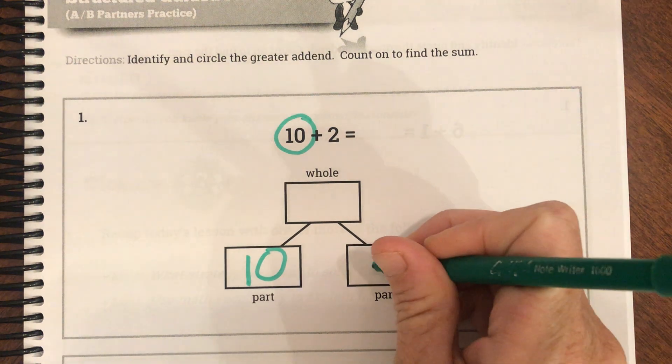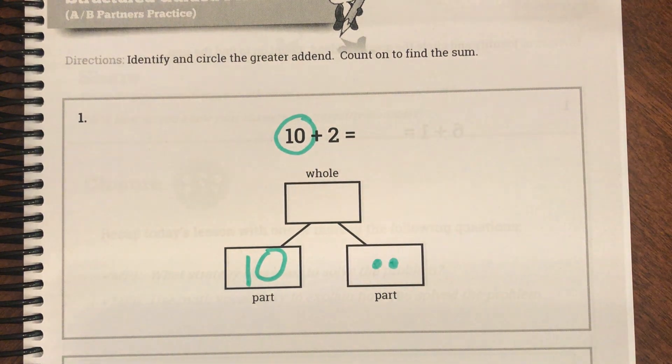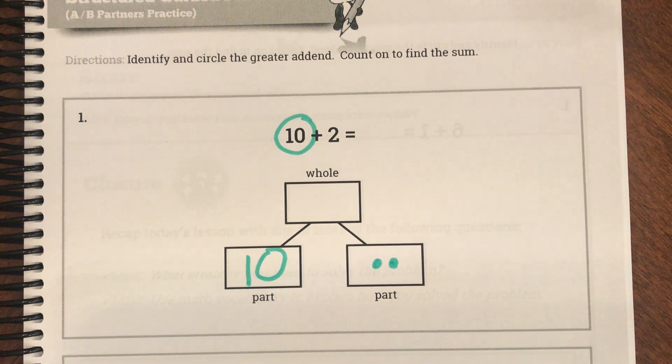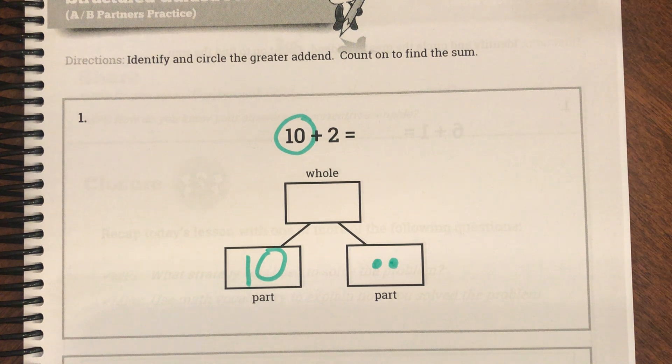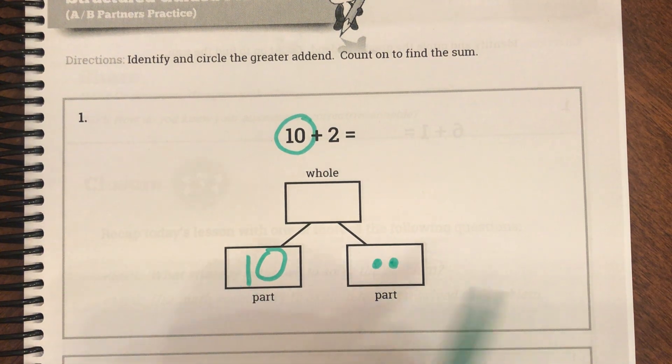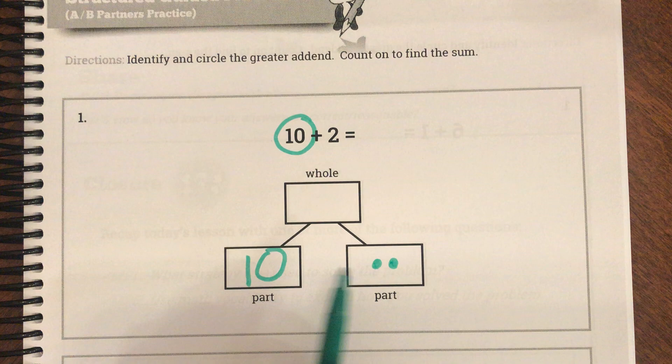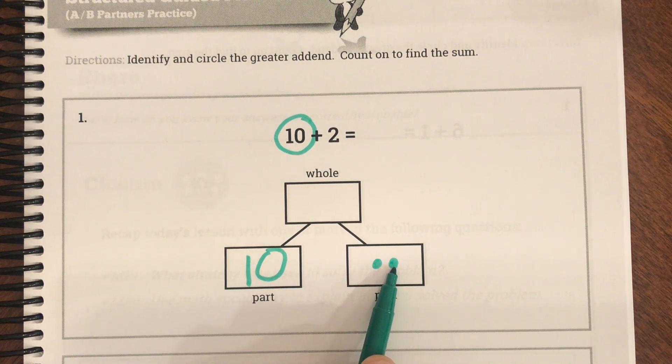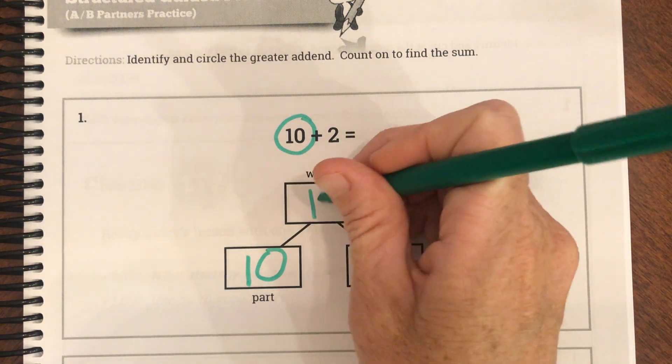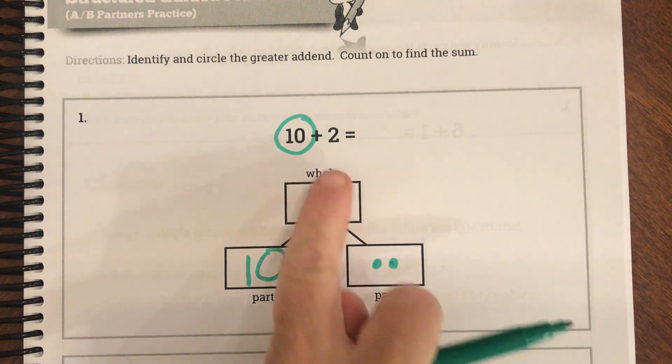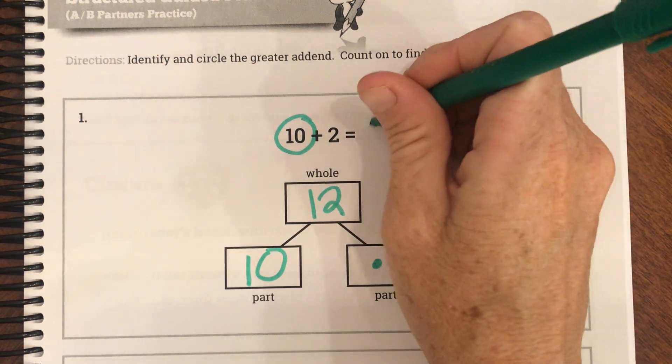So they want us to add 2. So let's do 2 dots in that box. So now we're going to count on. We're going to start at 10 and we're going to keep counting. So 10, 11, 12. And our answer is 12. Because our whole or our sum goes up there.